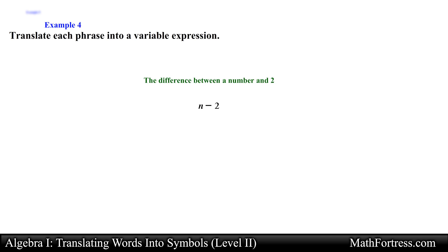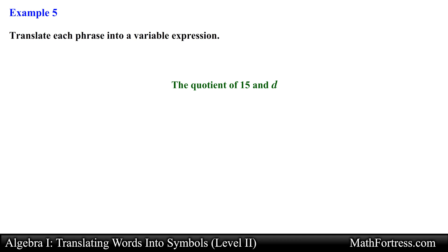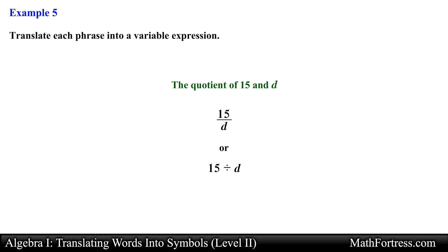Let's go to the next phrase: 'The quotient of 15 and d.' Here we have a division because of the keyword 'quotient.' This quotient involves the numbers 15 and the variable d, so the phrase translates to 15 divided by d, or 15 over d. Both answers are acceptable, but we usually prefer the answer with the fraction bar.